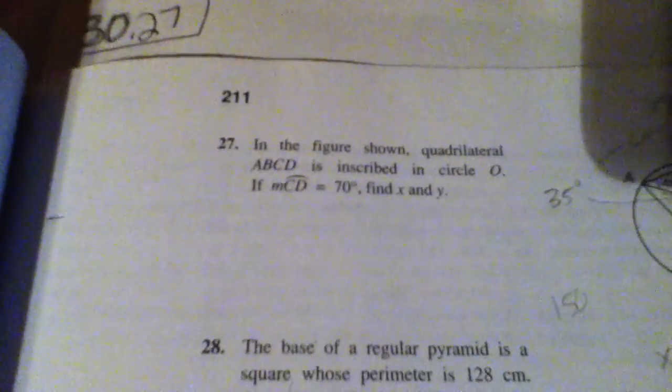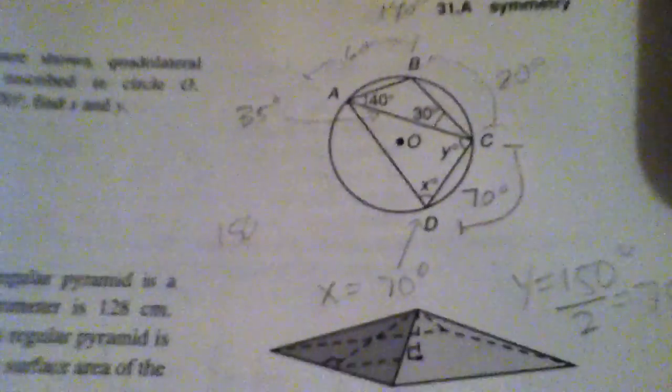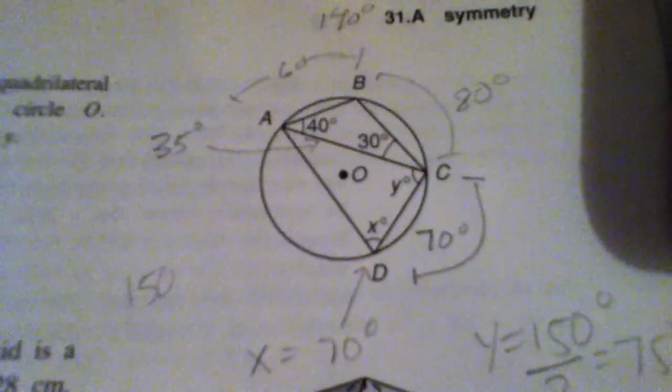This is pre-calc lesson 30 number 27. I started writing it on paper and then, well, you know, I get a little lazy. Sorry about the shadow. I kind of wrote it in my book with a pencil.